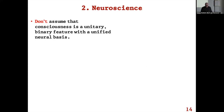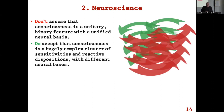Don't assume that consciousness is a unified binary feature with a unified neural basis. That's tempting if you think these extra inner features are either on or off — the redness is there or it isn't — which tends to make consciousness seem binary. But what we have are massive information and reactive processes that are not binary at all; they're completely graded. Do accept that consciousness is a hugely complex cluster of sensitivities and reactive dispositions, layered upon each other and interacting, with different but overlapping neural bases.